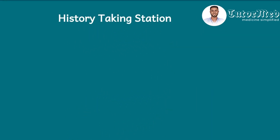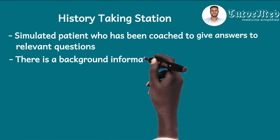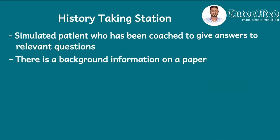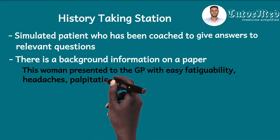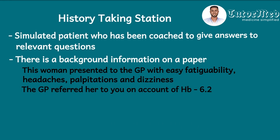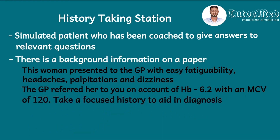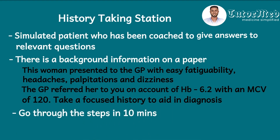Let's take a look at how the history taking station works. Usually there is a simulated or trained patient — not a real patient but a healthy patient who has been coached to give answers to relevant questions — and there is background information on paper. In one history station, this was the question asked: a woman presented to the general practitioner with easy fatigability, headaches, palpitations, and dizziness. The GP referred her to you on account of an Hb of 6.2 with an MCV of 120 — take a focused history to aid in diagnosis. You are expected to complete this focused history in 10 minutes.